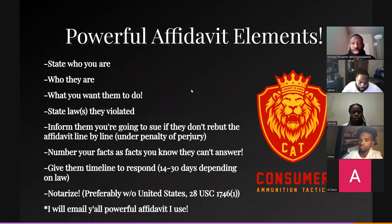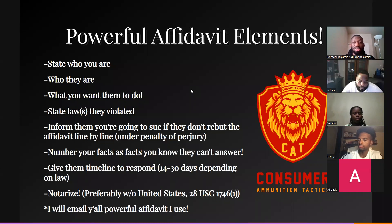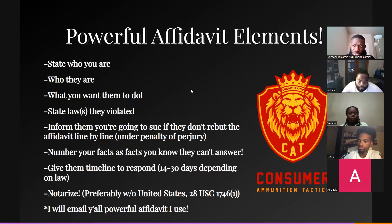You want to state what you want them to do — answer under the penalty of perjury that this account is yours. There are different questions. You want to state the law that they violated, FCRA laws. Let them know you're going to sue them if they don't rebut the affidavit line by line — that's a violation of Rule 301 of the Federal Rules of Evidence. We'll get into that when we talk about litigation.